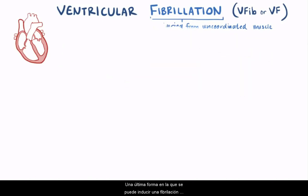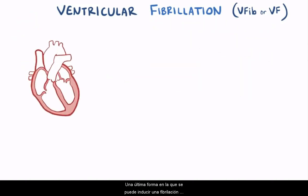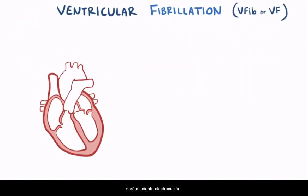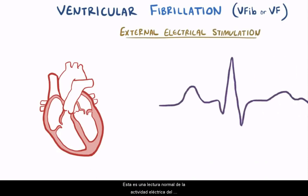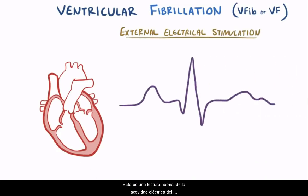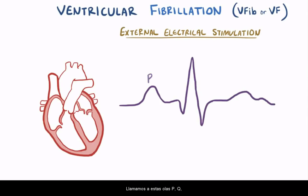One last means of inducing fibrillation is through electrocution, meaning external electrical stimulation. Here's a normal reading of the heart's electrical activity — an electrocardiogram, or ECG — and we call these waves PQRST, and sometimes U.